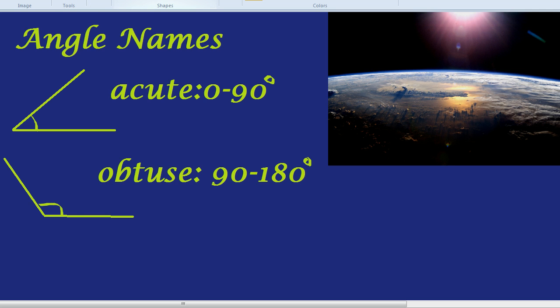What about an angle that's exactly 90 degrees? I'm talking about 0 to 90 and 90 to 180. What about one that would be exactly 90 degrees? Let's line up and draw it across. What's that called?